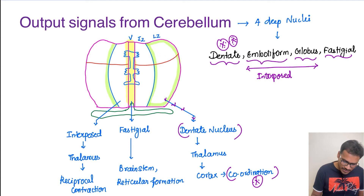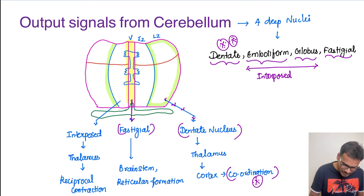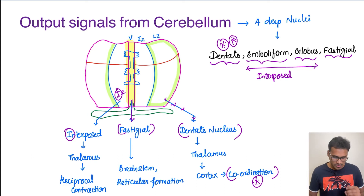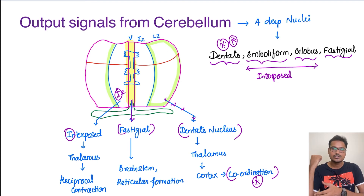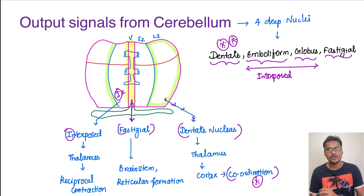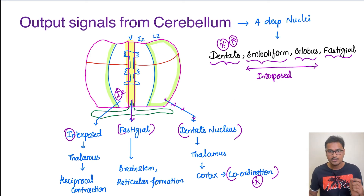From the vermis, there is a nucleus going to the fastigial nucleus, and from the fastigial it goes to the brainstem and reticular formation centers. From the intermediate zone — remember, eye for eye — intermediate goes to the interposed nucleus, and finally it goes to the thalamus and causes reciprocal contraction. For example, if I am flexing my biceps, the triceps must relax so that the flexion can be efficient. The agonist muscles contract while the antagonist muscles relax — this is done with the help of the interposed nucleus.